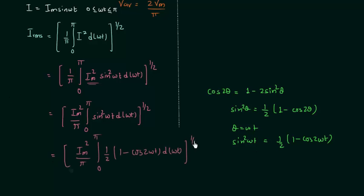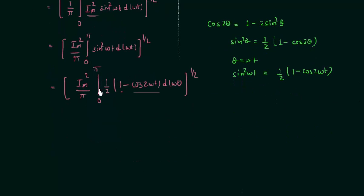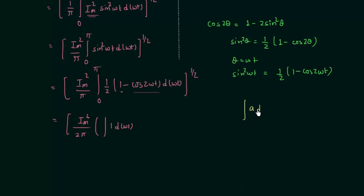Let's do this quickly. I will integrate 1 and cos 2ωt individually. This 1/2 is constant, so we have Im²/(2π) inside the bracket. Integration of 1 with respect to ωt equals ωt, because the integration of a constant A with respect to dx equals Ax — here we have ωt in place of x and 1 in place of A, giving us ωt. The integration is from 0 to π, minus the integral from 0 to π of cos 2ωt d(ωt) times 1/2.